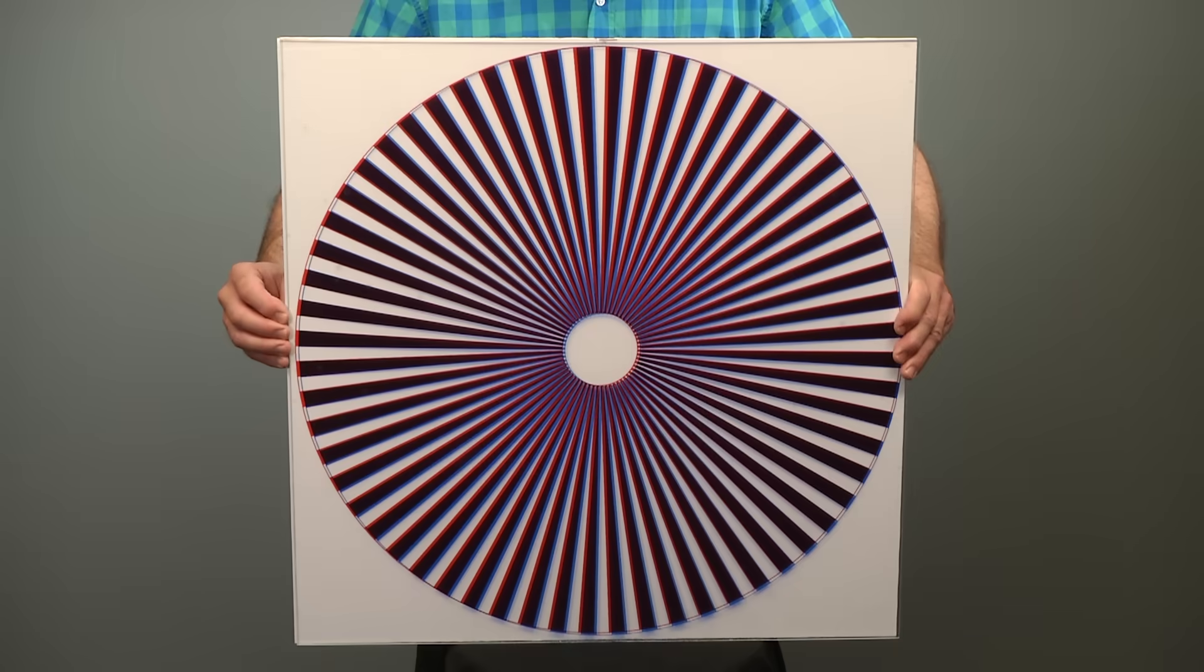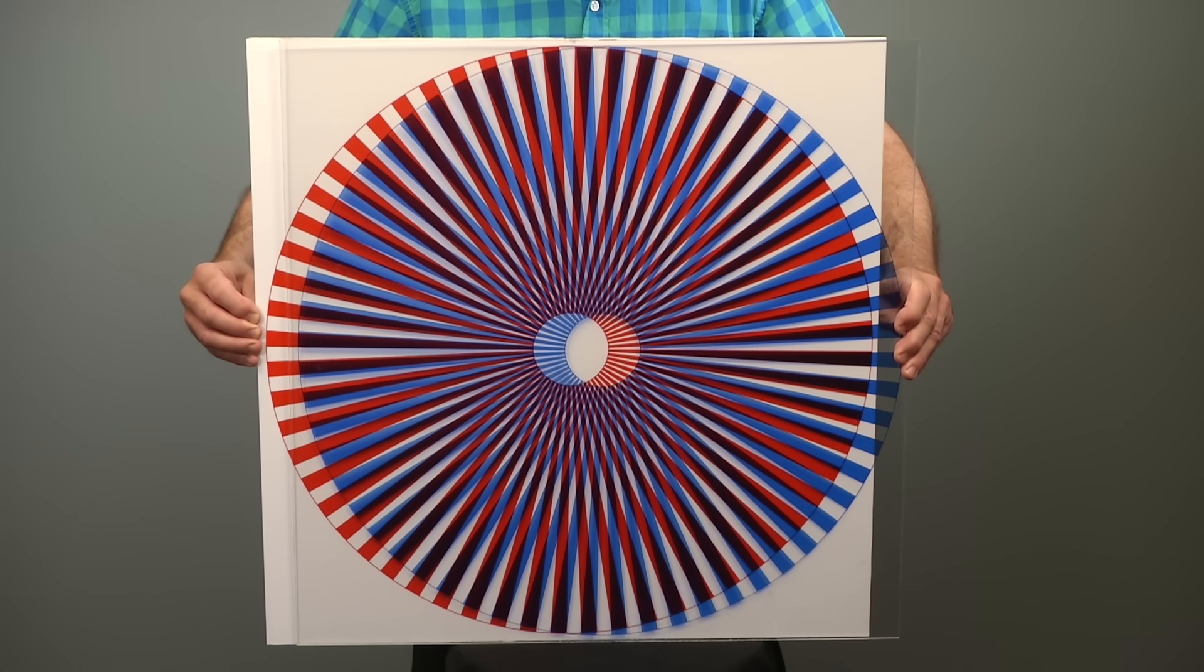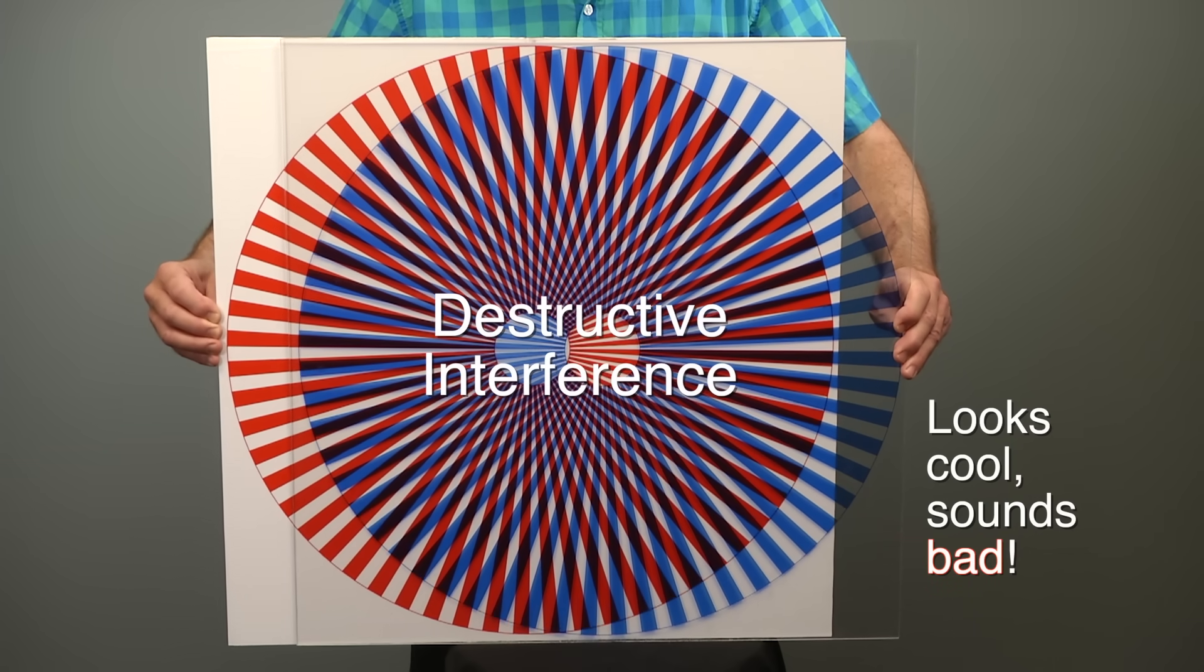I'll demonstrate using these two identical patterns. The blue pattern represents direct sound waves, and the red pattern represents reflected sound waves. They start out together, but when I move the red one backwards, like a delayed sound reflection, it creates destructive interference patterns which changes the original sound wave.